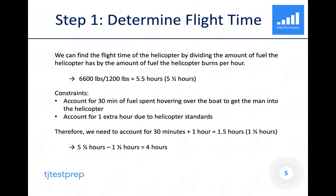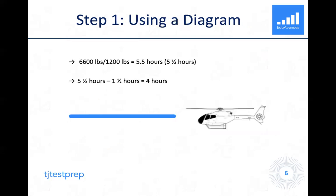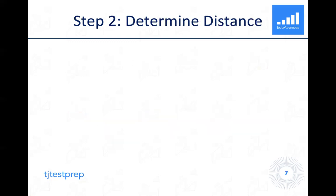We take the original 5.5 hours and subtract 1.5 hours, which leaves us with 4 hours that the helicopter can fly. Using a diagram to display this visually: of the total 5.5 hours, 30 minutes is taken up hovering over the boat, another hour is taken up by helicopter standards, and that leaves 4 hours to fly back and forth.